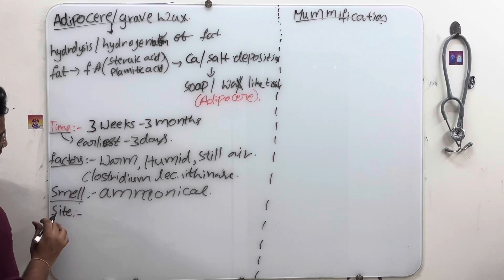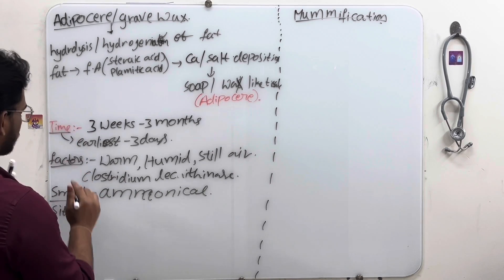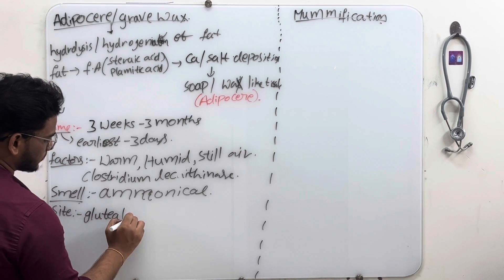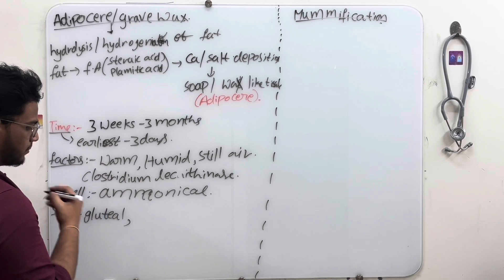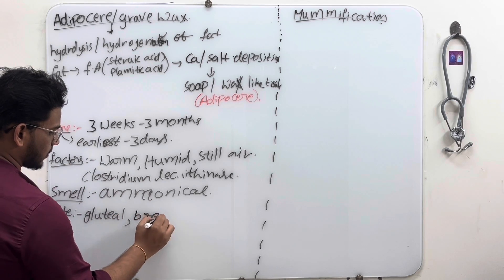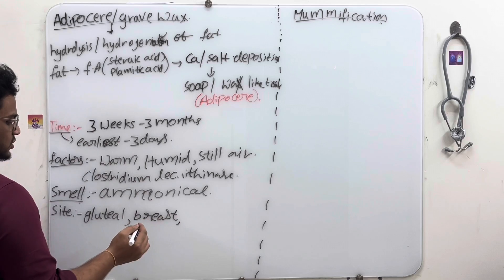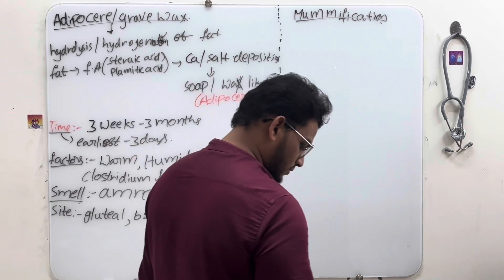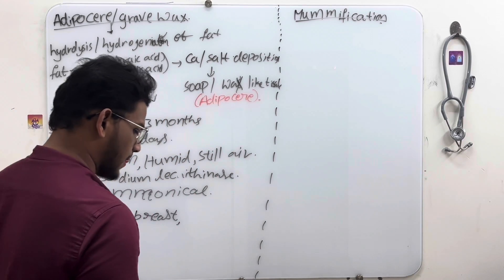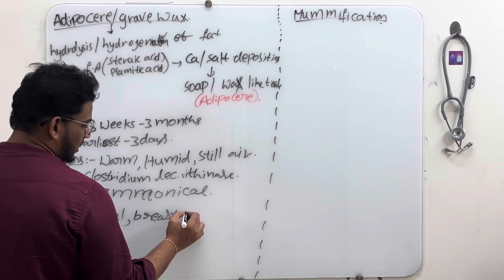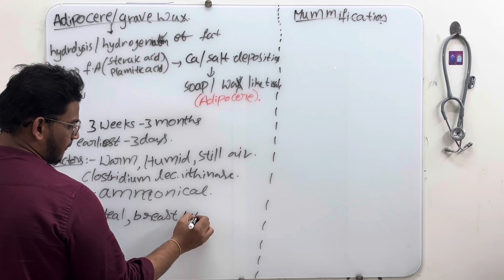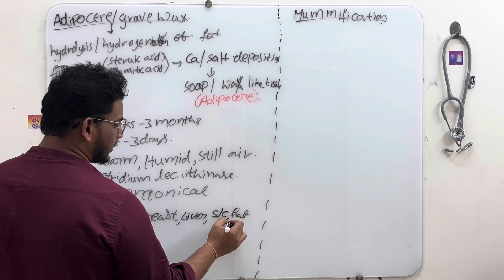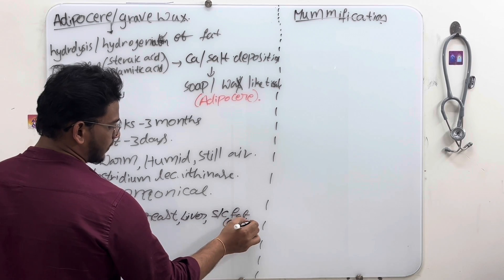Where will you find more adipocere? In areas with more tissue: gluteal region, breast, liver, and subcutaneous fat. This is where it appears earliest.